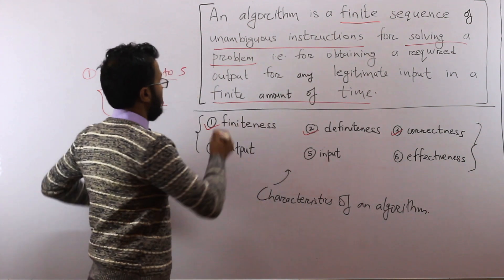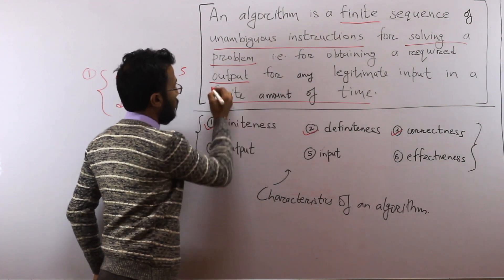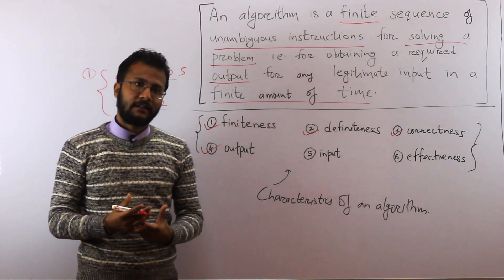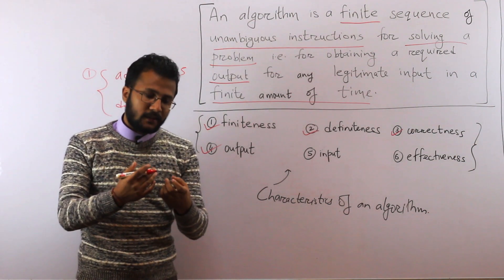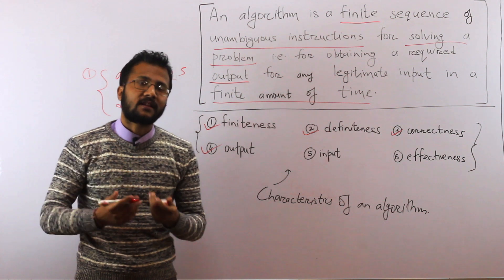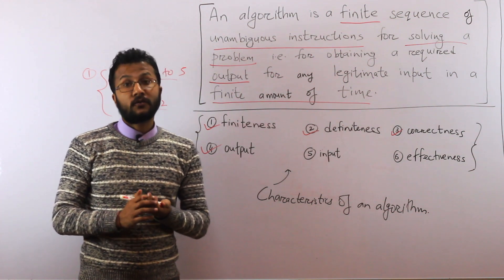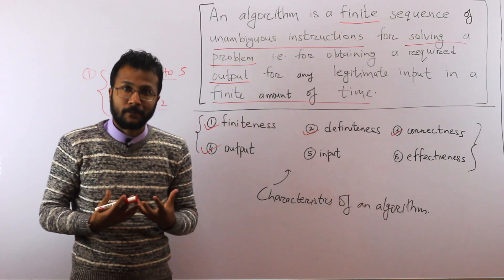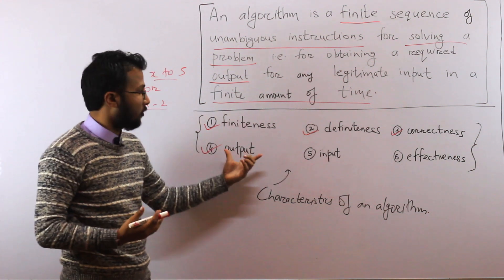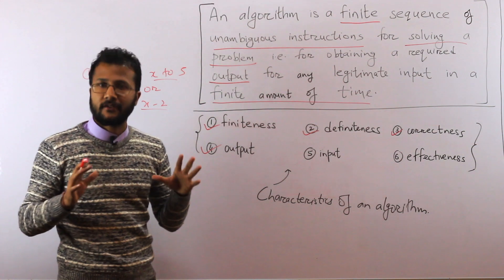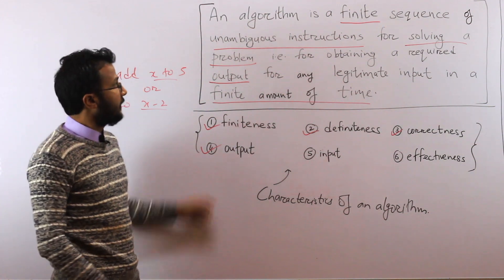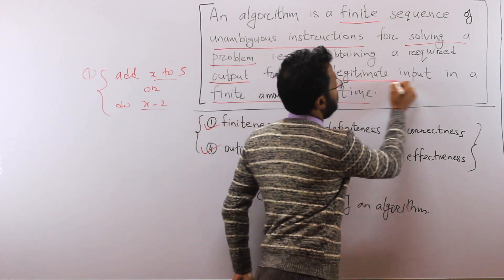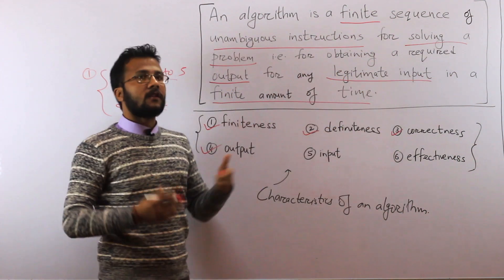The next property is that the algorithm should have an output. Since you are trying to find out something, your algorithm should do some processing and then give you back the output. It should produce an output for any legitimate input.